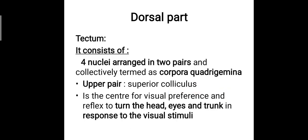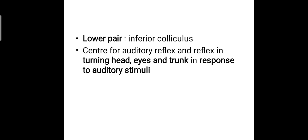The dorsal part of the midbrain is composed of a single part, that is the tectum. The tectum consists of four nuclei arranged in two pairs, collectively termed corpora quadrigemina. The corpora quadrigemina is further divisible into an upper pair and a lower pair. The upper pair is termed the superior colliculus, which is the center for visual preference and the reflex to turn the head towards a visual stimulus. The lower pair, the inferior colliculus, is the center for the auditory reflex — the turning of the head towards an auditory stimulus.